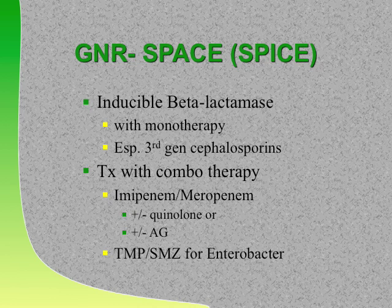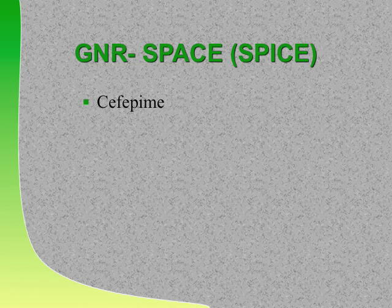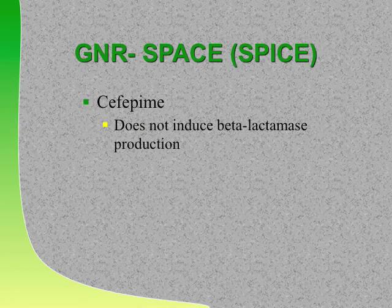A nice strategy for gram-negatives: use cefepime or Zosyn up front as your first-line drug. When that fails, go to second-line: carbapenems—imipenem, meropenem, doripenem. For enterobacter, you can even use Septra. The problem with aztreonam, ceftazidime, and Zosyn is you may induce the SPICE or SPACE bugs. Cefepime replaced most hospitals' use of ceftazidime because cefepime does not induce the SPICE bugs—that's why cefepime has replaced ceftazidime. Long-term, cefepime has less induction of SPICE bugs.